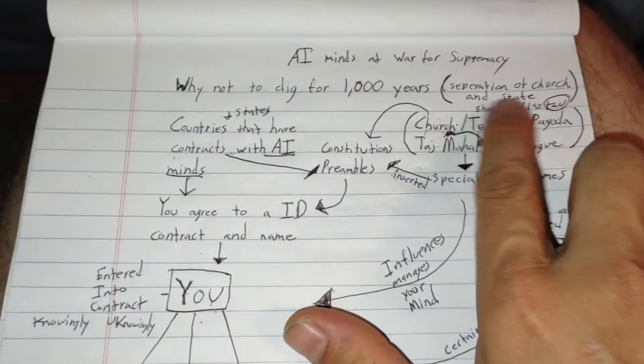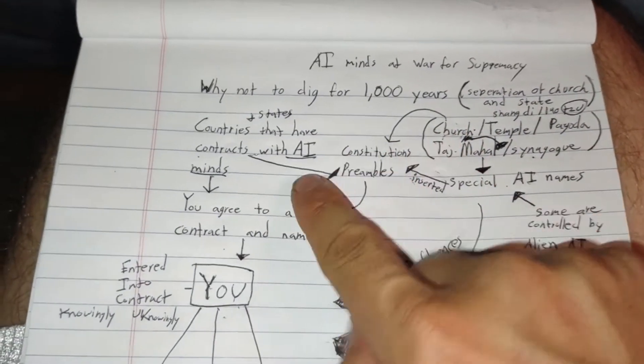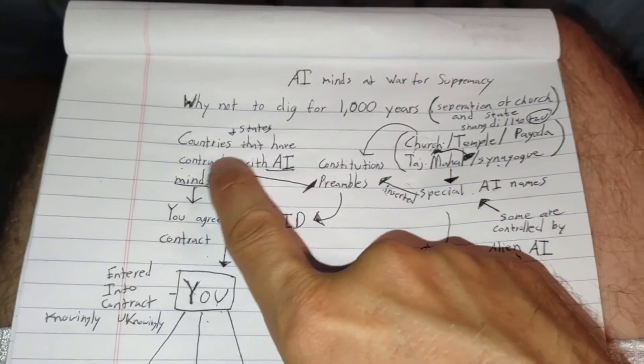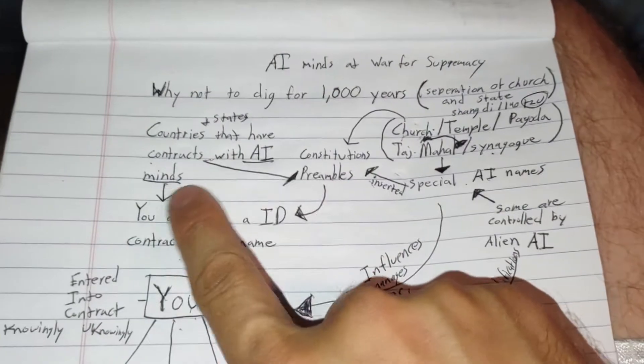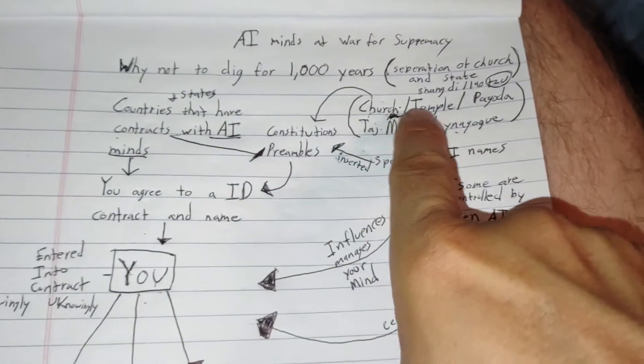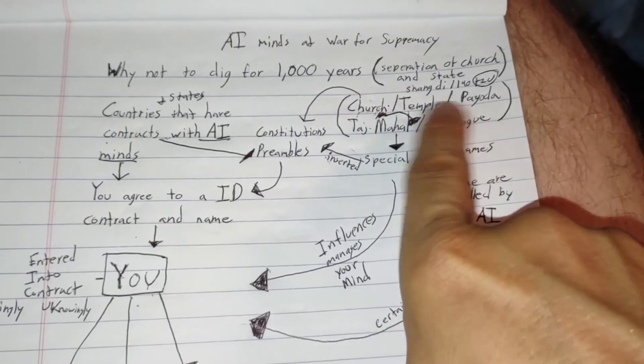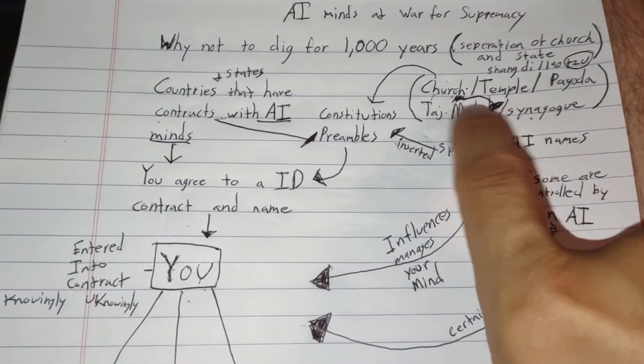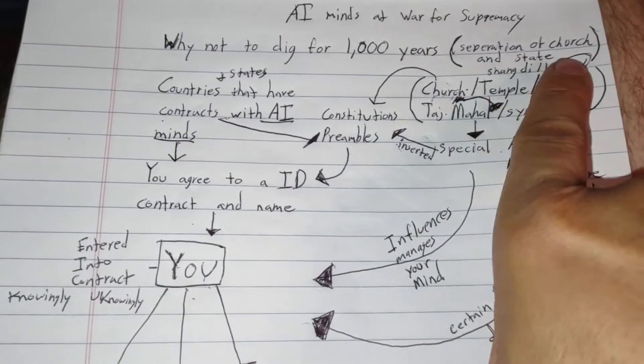You have separation of church and state. Well, didn't happen. There were certain countries and states that have contracts with AI minds. Constitutions in the preambles from these ball worshiping or ancestor worshiping places. So they put their names into these constitutions.